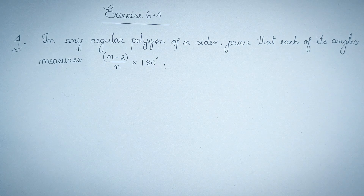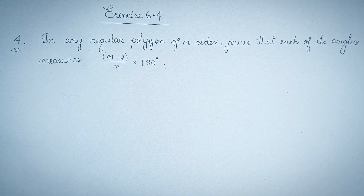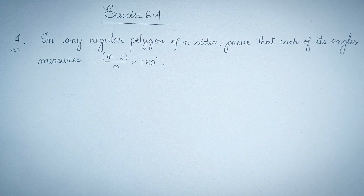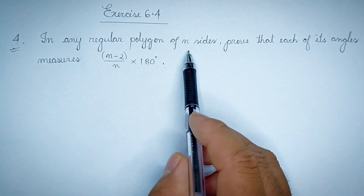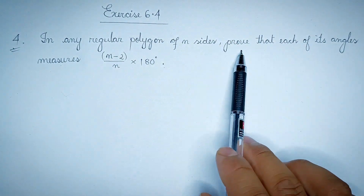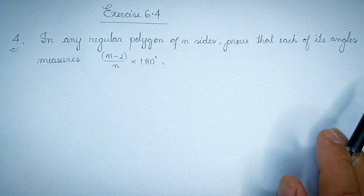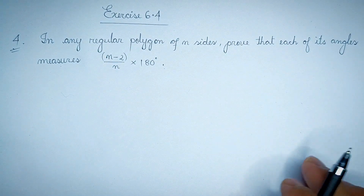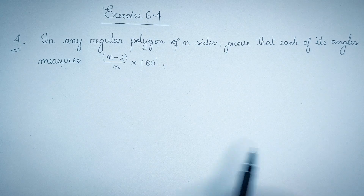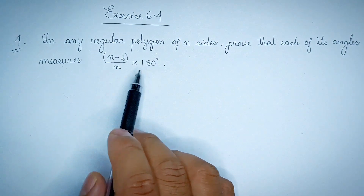Exercise 6.4, Question 4. In any regular polygon of N sides, the interior angle is given by the formula n minus 2 by n into 180 degrees.